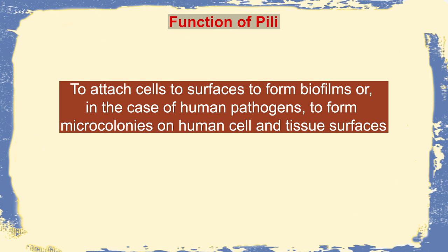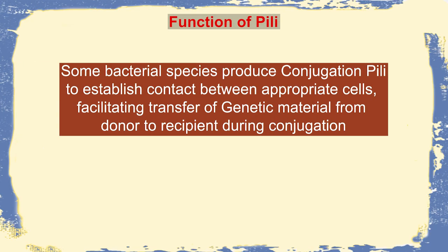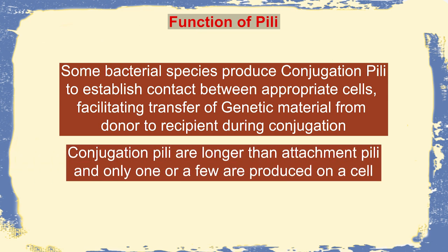The function of pili is to attach the bacteria to surfaces where they want to colonize, helping them form biofilms and infect the cells they target. Some bacteria also participate in horizontal gene transfer by means of conjugation. These bacteria produce a special kind of pili called conjugation pili, which help bring another bacterium into contact and transfer plasmids from the donor to the recipient bacterium. In summary, pili are used for colonization or biofilm formation, while conjugation pili are used for horizontal gene transfer of plasmids.